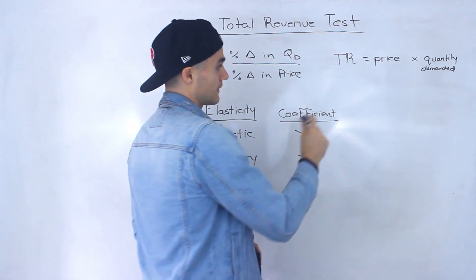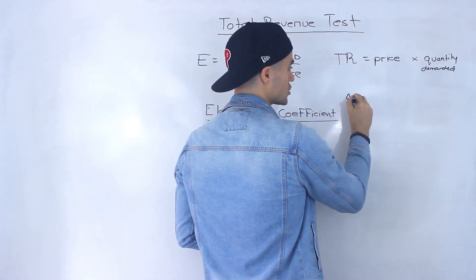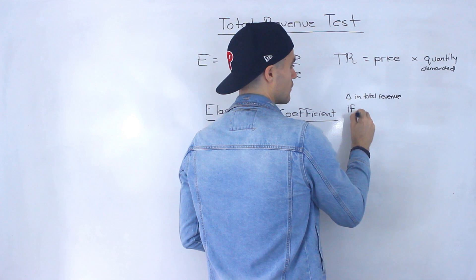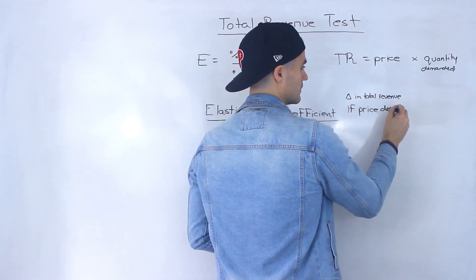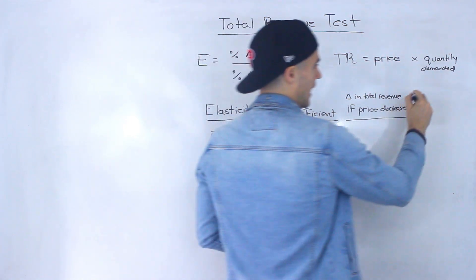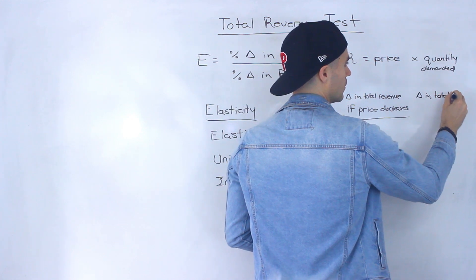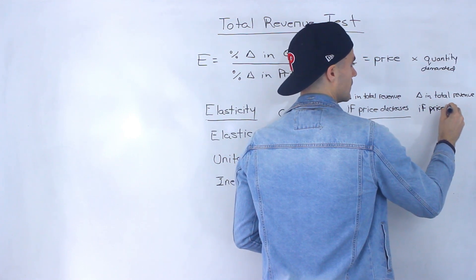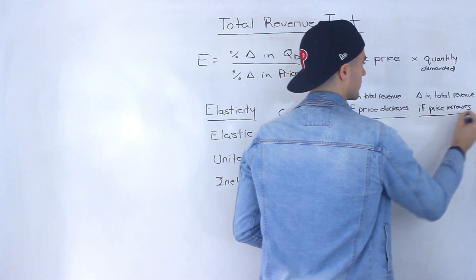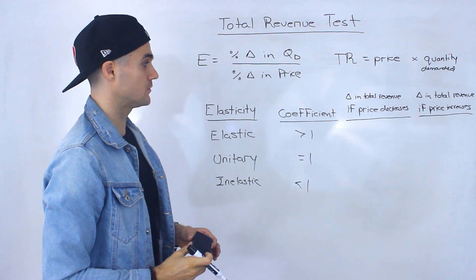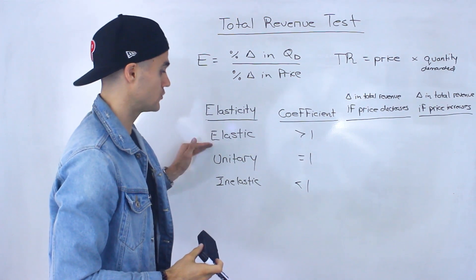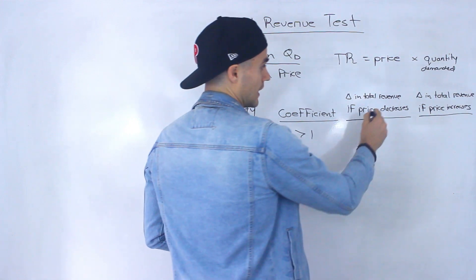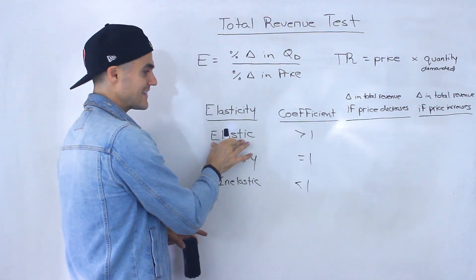What we're going to be looking at is what happens to total revenue — what's the change in total revenue — if the price decreases or if the price increases. Depending on what's happening with total revenue, we can determine if a good or service is elastic, unitary, or inelastic. Let's say that a price decreases for a good and let's say that the good is elastic.